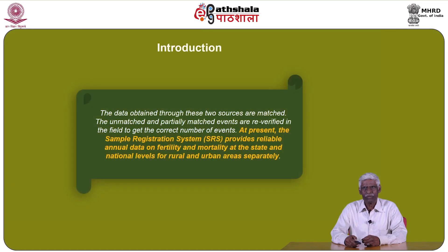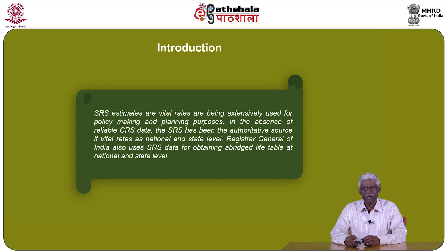The data obtained through these two sources are matched. The unmatched and partially matched events are reverified in the field to get the correct number of events. At present, the Sample Registration System, usually known as SRS, provides reliable annual data on fertility and mortality at the state and national levels for rural and urban areas separately. SRS vital rate estimates are being extensively used for policy making and planning purposes. In the absence of reliable CRS data, the SRS has been the authoritative source of vital rates at the national and state levels.